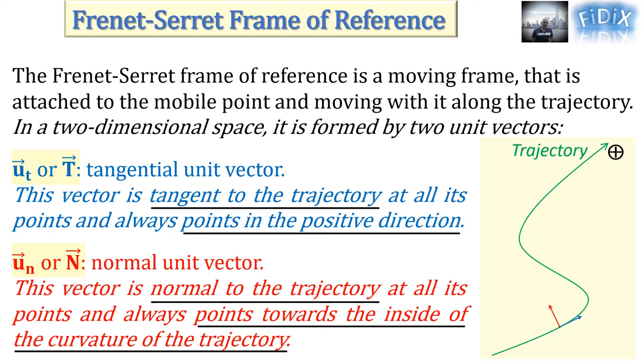The blue vector represents the tangential unit vector U_T, and the red vector represents the normal unit vector U_N.